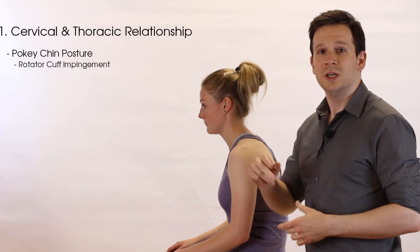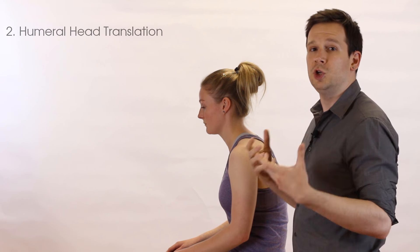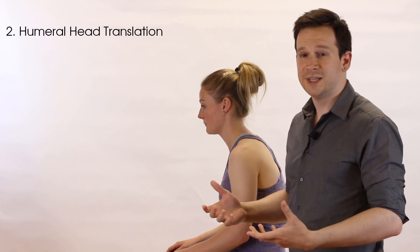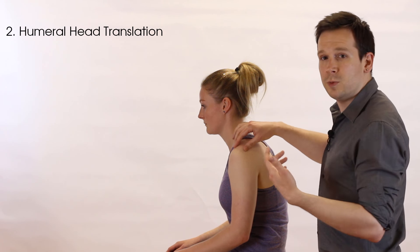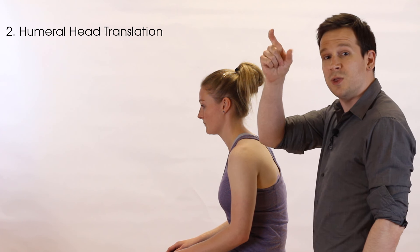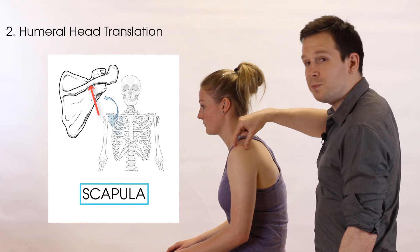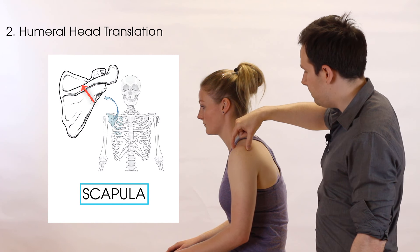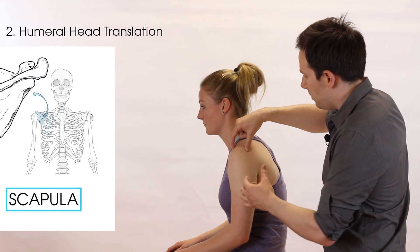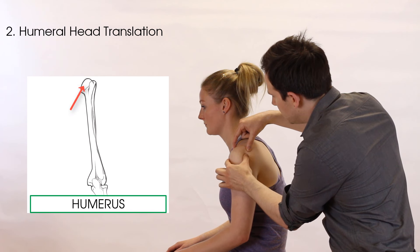The second key thing in the lateral view is the relative anterior-posterior translation of the humeral head on the glenoid fossa. The easiest way to assess this is to clasp your thumb and first finger around the spine of the scapula and the anterior edge of the acromion, then place your other fingers across onto the humeral head.